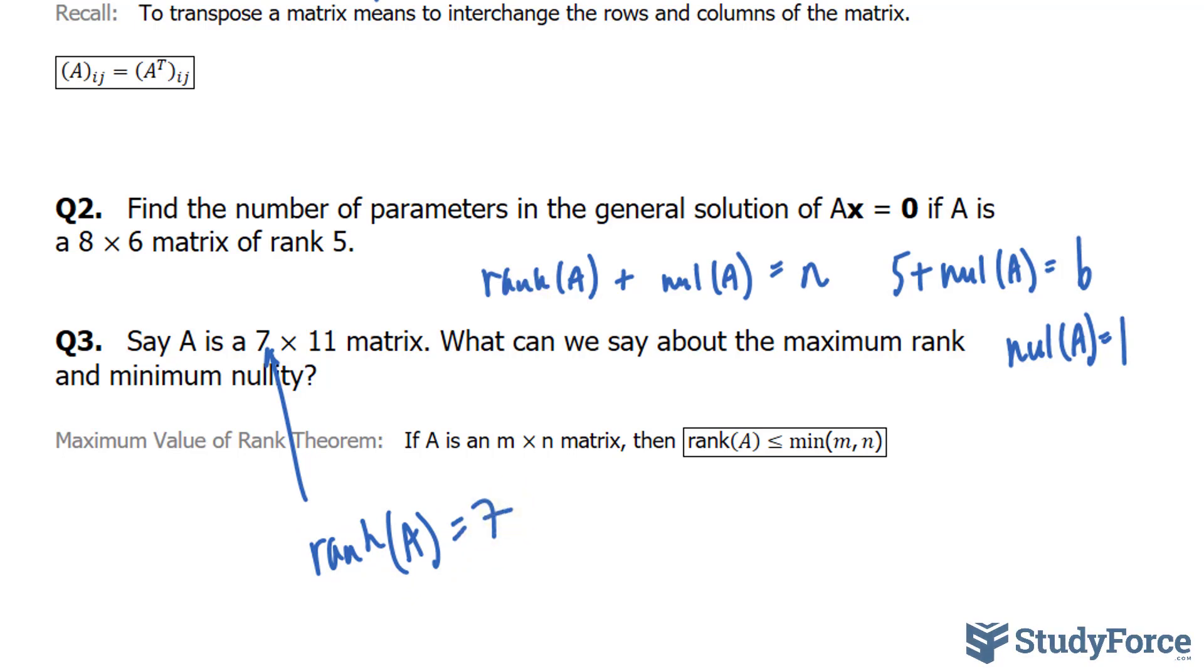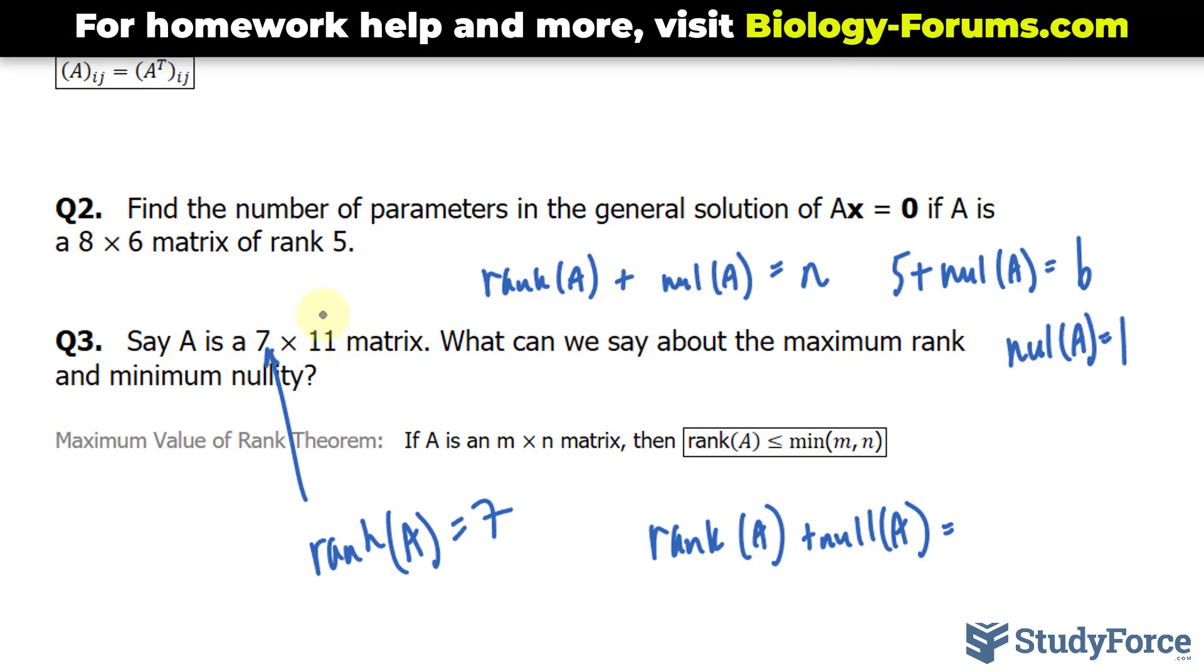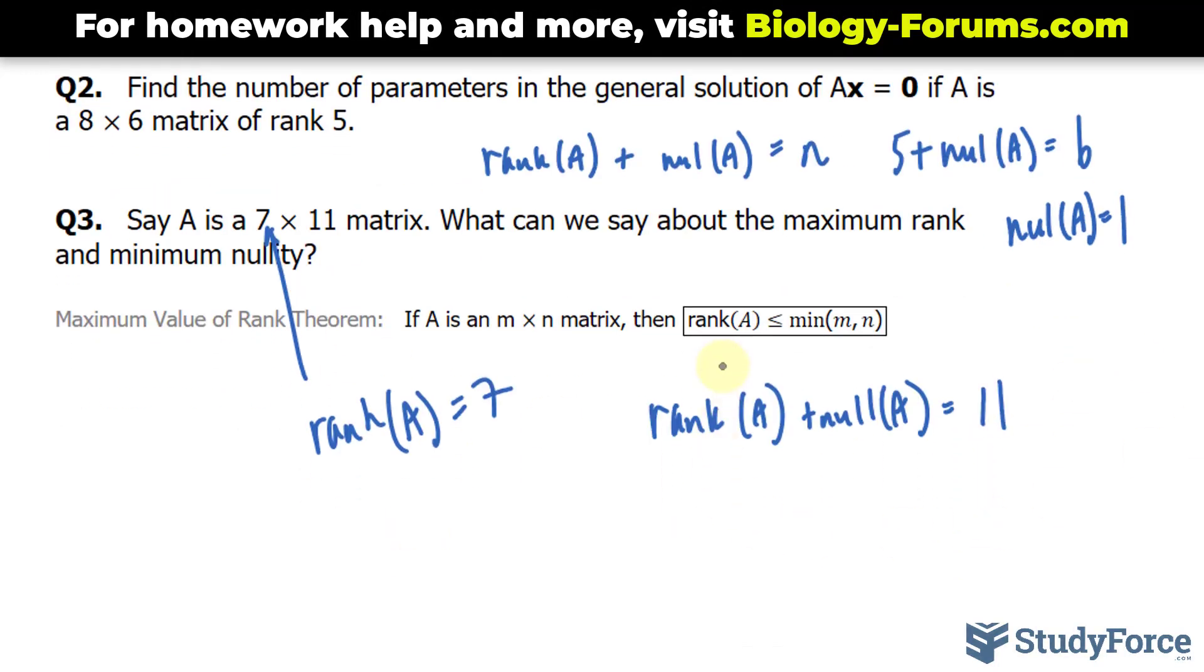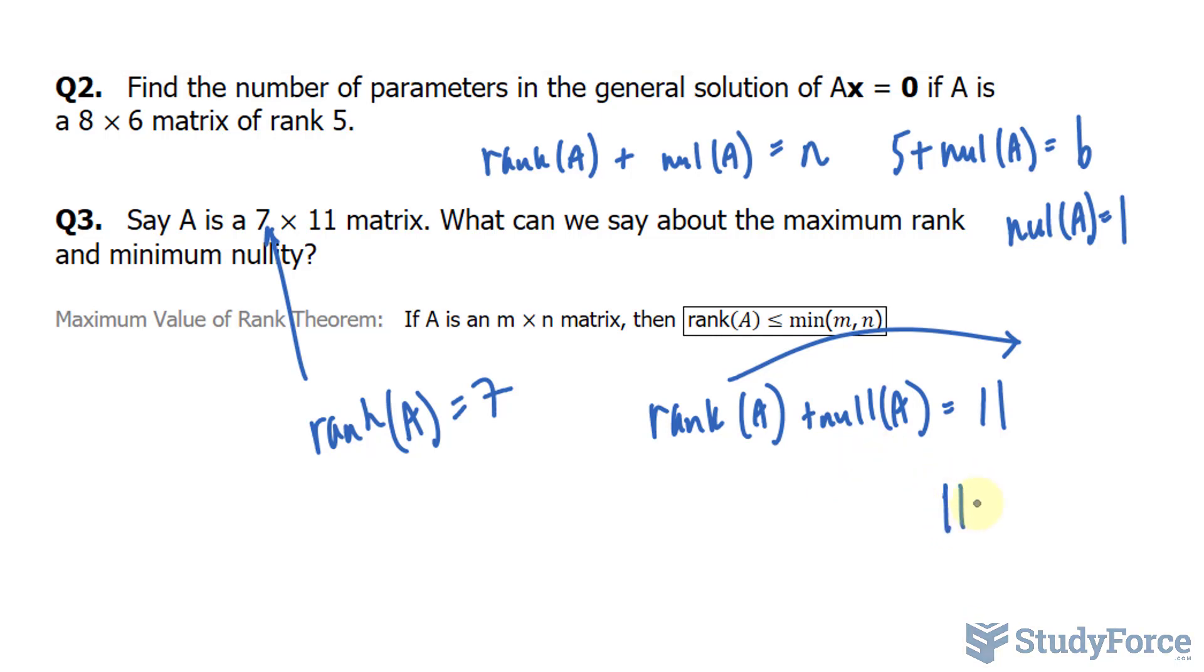If we reuse the relationship above, where rank of A plus null of A equals the number of columns, in our case 11, and if we rearrange and set it as 7, 7 taken away from 11 gives us 4. So the nullity of A must be greater than or equal to 4. And there you have it.